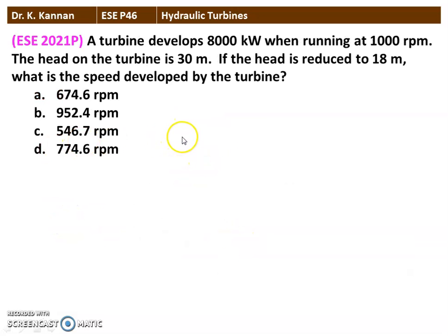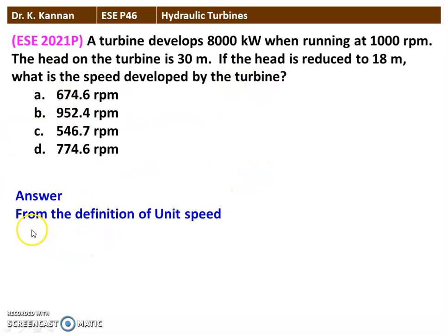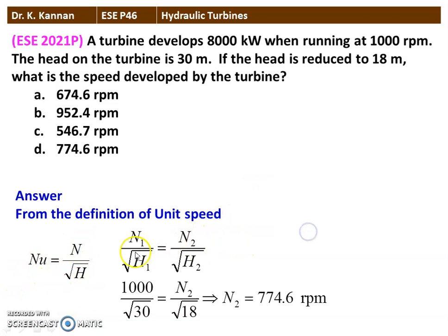The next question is from the 2021 question paper. A turbine develops 8000 kilowatts when running at 1000 rpm under a head of 30 meters. If the head is reduced to 18 meters, what is the speed developed by the turbine? Using the unit speed formula: Nu = N / √H, we set N1 / √H1 = N2 / √H2. Substituting: 1000 / √30 = N2 / √18. Solving, N2 = 774.6 rpm. Option D is the correct answer.